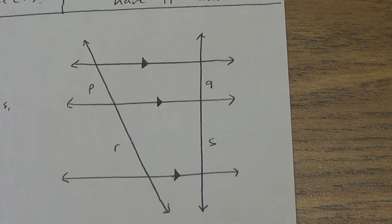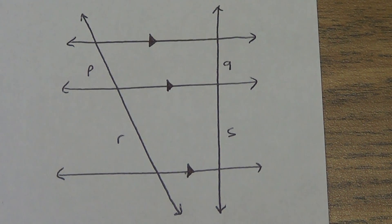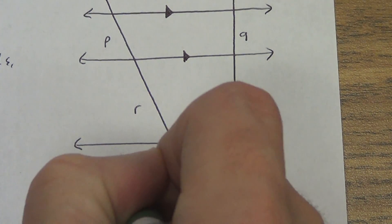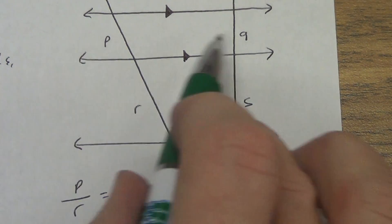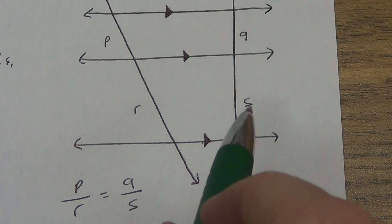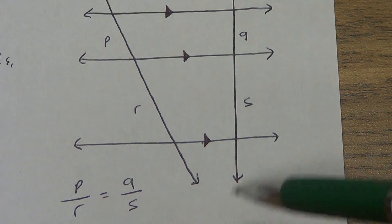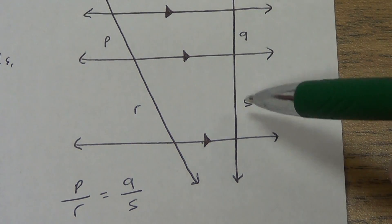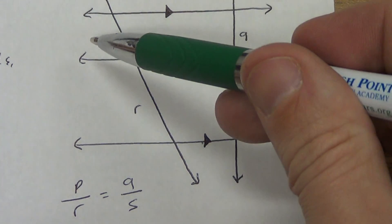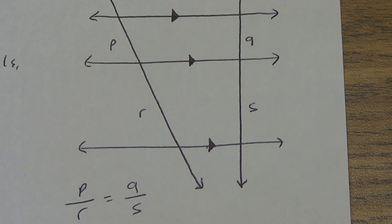Since the theorem says it divides the transversals proportionally, just set up the proportion the way it looks: P over R equals Q over S. Could you work sideways? Sure — P over Q equals R over S. Could you do Q over S equals R over P? No — you didn't stay consistent. Q over S means you have to do P over R. If you want S over Q, then you need R over P. There are 24 different ways to set up a proportion — eight of them are correct, sixteen are wrong.